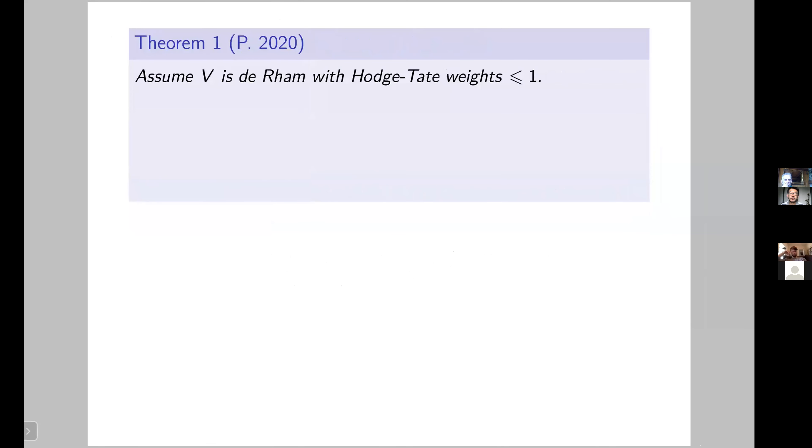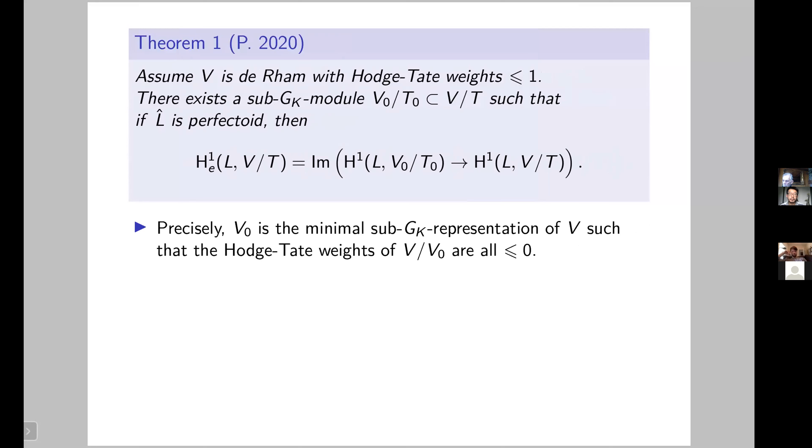The result I would like to explain is the following. Now if you assume that the representation is de Rham, again that's all of what we want, but with a strong condition which is that the Hodge-Tate weights are less than or equal to one, then again we have the same result as Coates and Greenberg. So there exists a sub-Galois module, which I denote V_0 or T_0, such that if L is perfectoid, this Bloch-Kato subgroup again is the image of the natural map you get in cohomology, Galois cohomology, via the inclusion of V_0 or T_0 inside V over T.